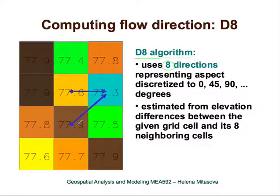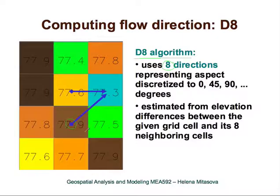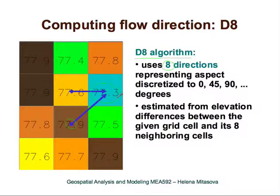The D8 algorithm estimates flow direction from elevation differences between a given grid cell and its neighboring cells. For example, if this is a given grid cell and we are trying to find the flow direction from it, we compare the difference in elevation between this grid cell and all other neighboring cells until we find the one where this difference is the largest — that would be the steepest slope direction.